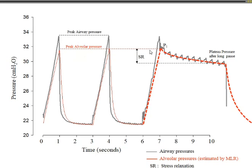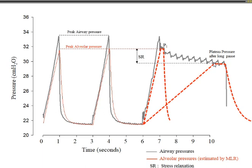If I had a very slow inspiratory flow, my peak alveolar pressure would be equivalent to this long plateau pressure. But if I'm using tidal ventilation with short inspiratory time, my peak alveolar pressure and the peak stress in the lung is really much higher than with a longer plateau pressure. So you have to use a short inspiratory pause to estimate driving pressure, because then you capture this component of stress, which is very important.